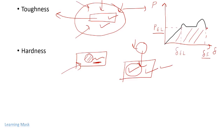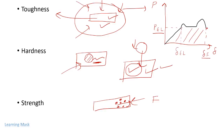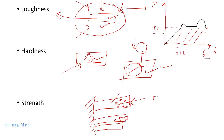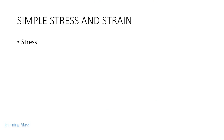The next property is strength. Suppose we apply a compressive force to a material — internal resisting forces are developed that resist the deformation. For example, if we apply force to a material it should deform, but internal resisting forces develop in the opposite direction to resist it. This internal resisting force is known as the strength of the material.